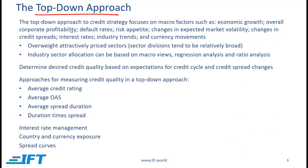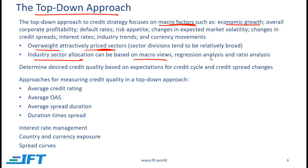Next we have the top-down approach. This focuses on various macro factors such as economic growth, overall corporate profitability, and default rates. In this approach we overweight attractively priced sectors, and generally sectors in the top-down approach are much broader than in the bottom-up approach. When determining industry sector allocation, we can do this based on macroeconomic views, regression analysis, or ratio analysis.